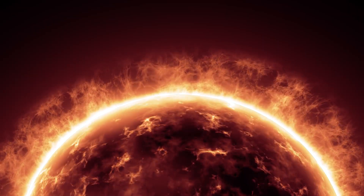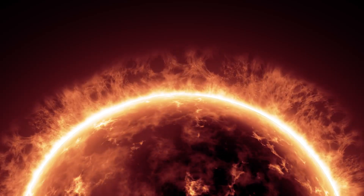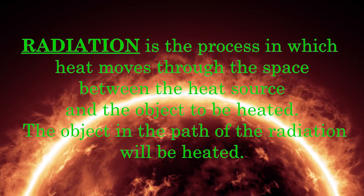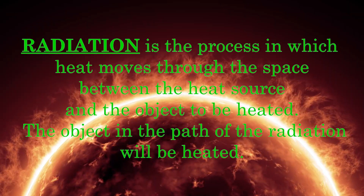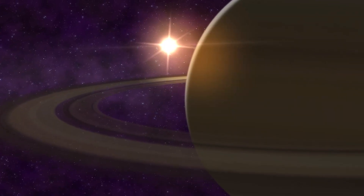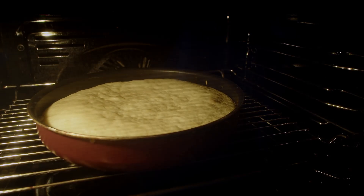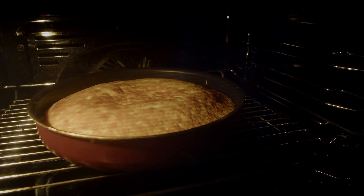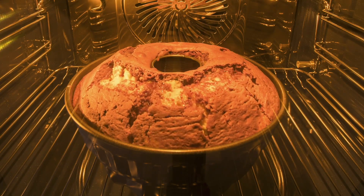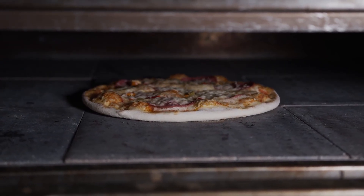The third method of heat transfer is radiation. In this process, heat is transferred without substances or matter moving or touching. Instead, the heat moves through the space between the heat source and the object to be heated. The object in the path of the radiation will be heated. For instance, the sun uses this method to heat all the planets, including Earth. Similarly, when we broil or bake something, the heat source in the oven sends heat energy through the space between it and the baking item. The heat energy enters into the food and cooks it. Although radiation heating is typically the least efficient, its effects travel the greatest distance.